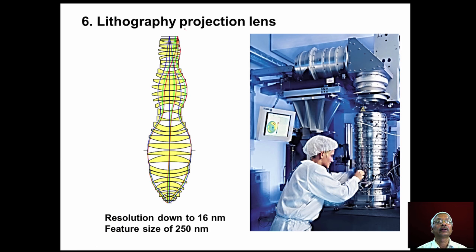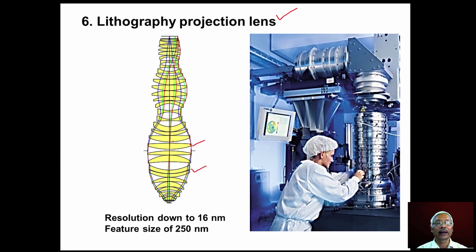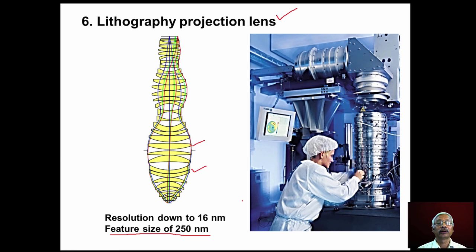A lithography projection lens system demonstrates a very complex nature of lens assembly. Some lenses are cemented and some individual lenses are mounted in the mechanical structure. Plano-convex, plano-concave, and other types of lenses are precisely aligned axially and radially. Electronic circuits with feature sizes as small as 250 nanometers can be fabricated using this lithography projection lens assembly.